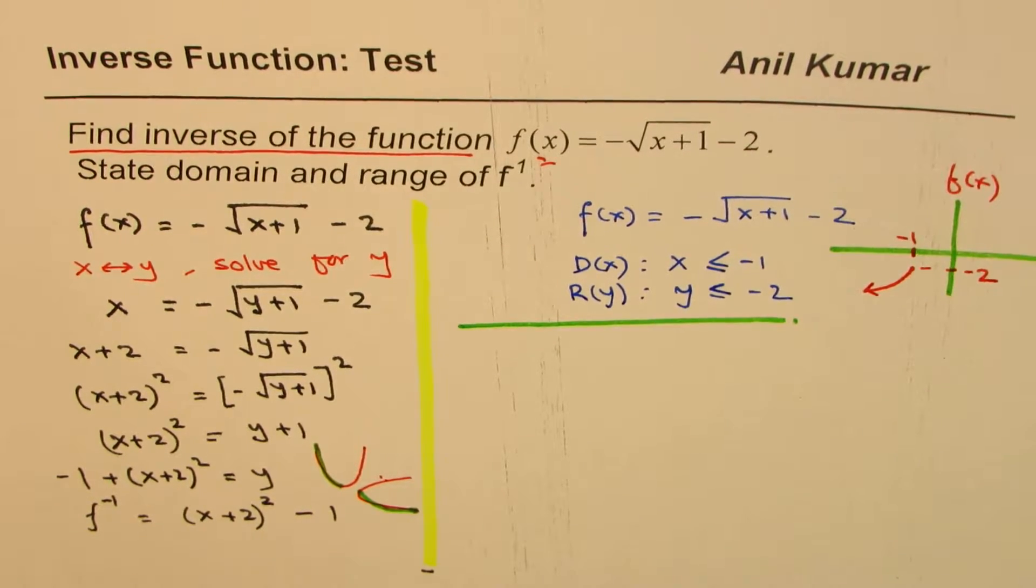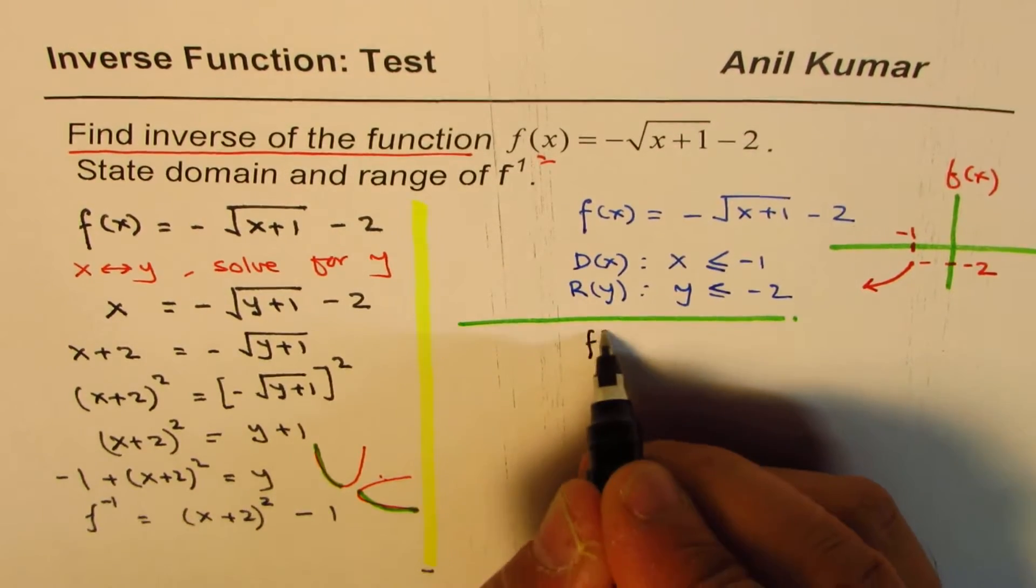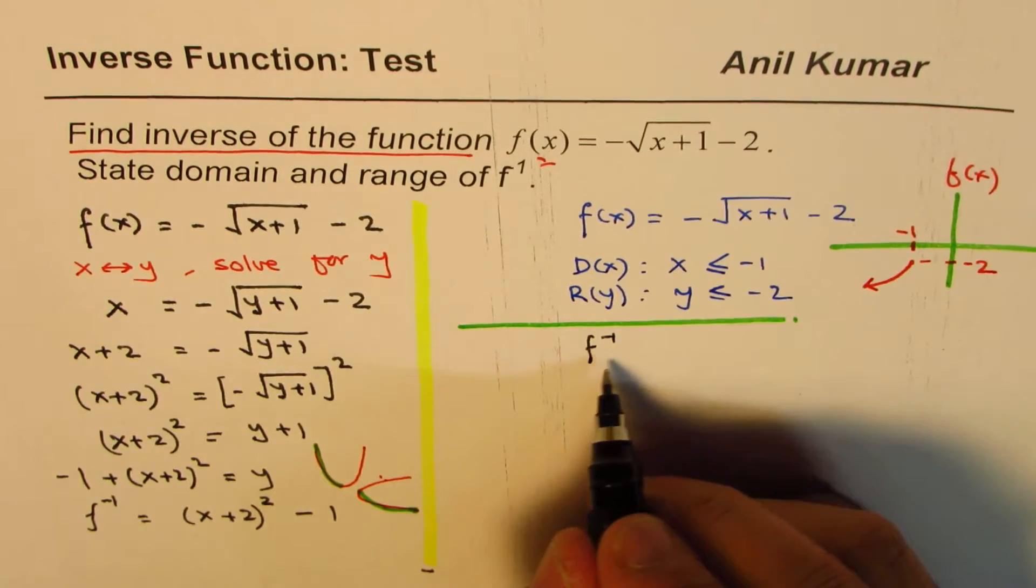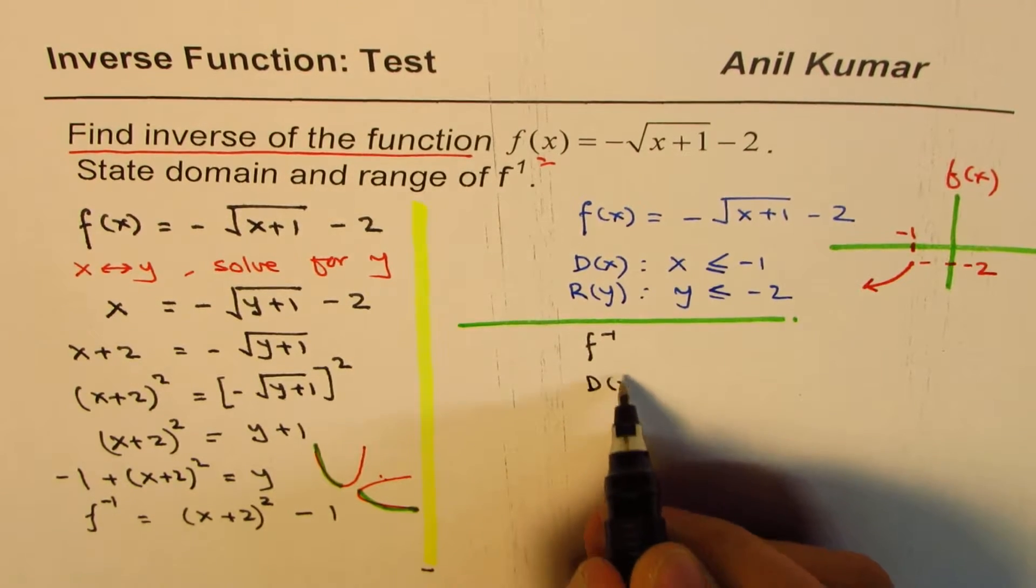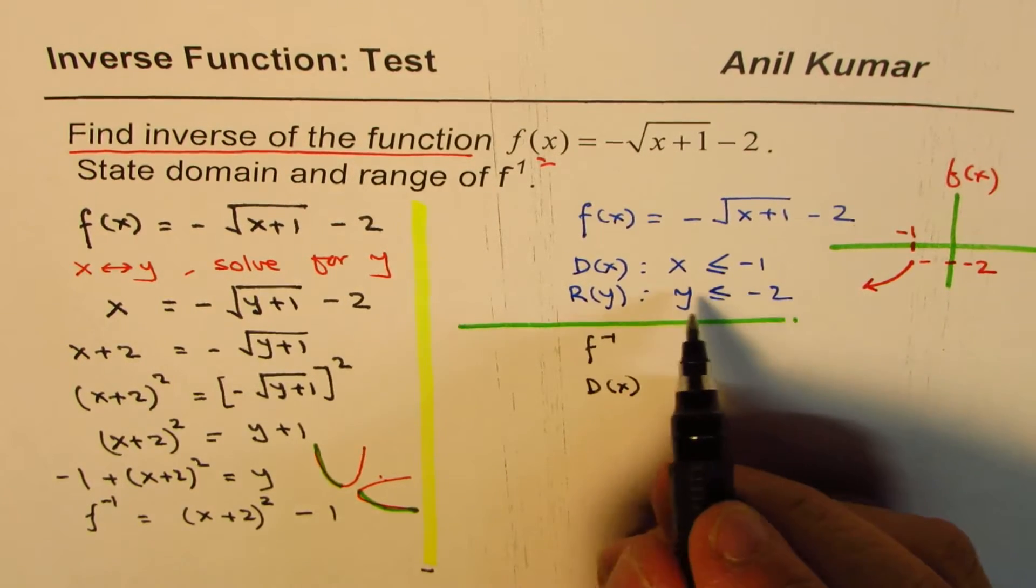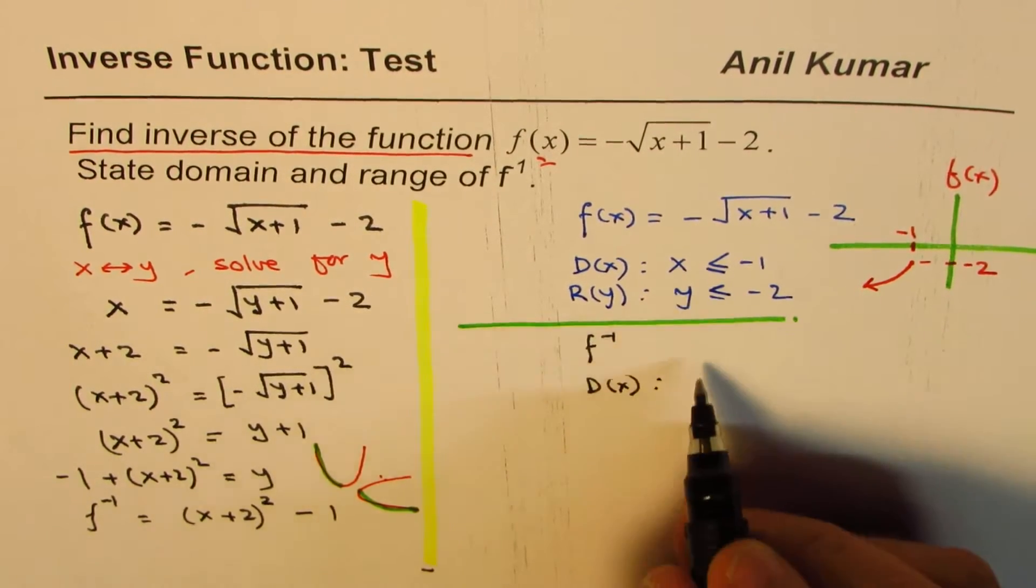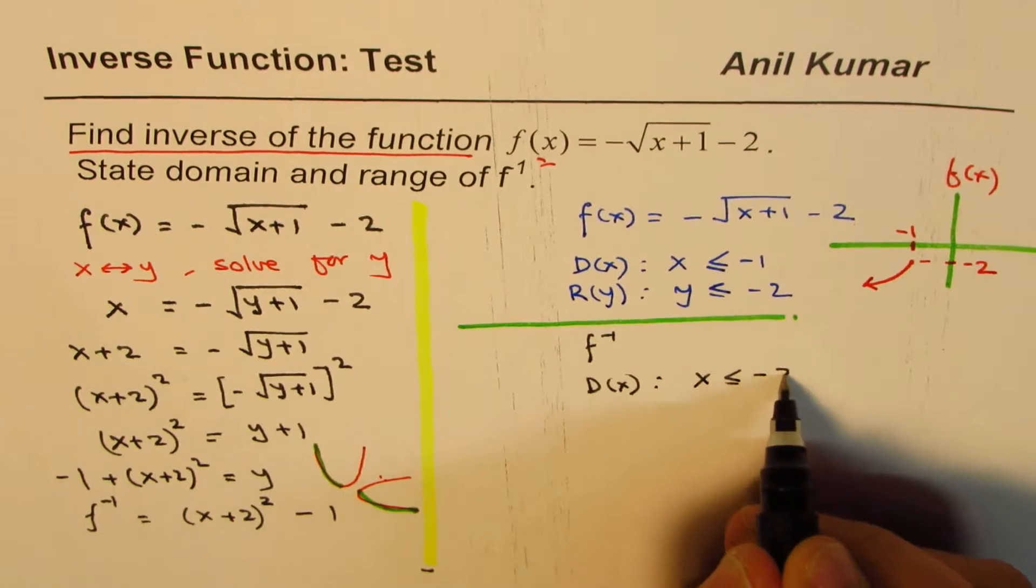Now, if that is the case for the function, what will be the inverse function domain and range? For inverse function, domain and range will swap. So the domain of that function will be, what was the range, right? So it would be x less than equals to minus 2.